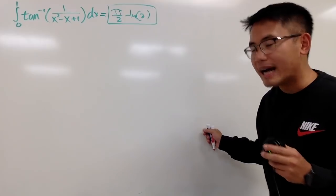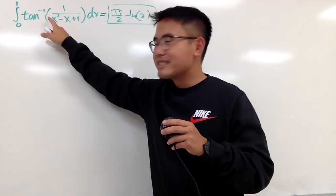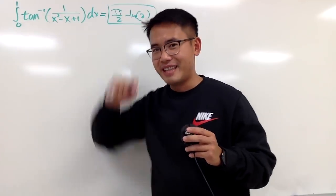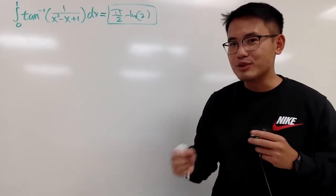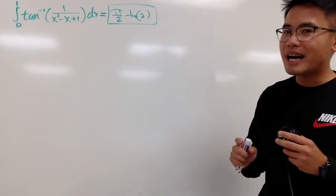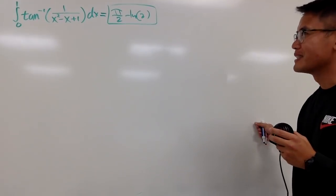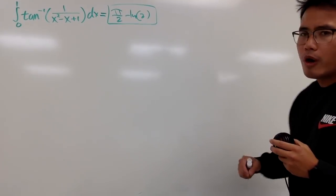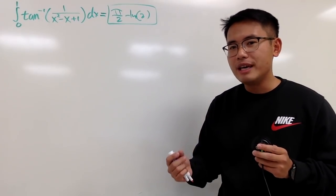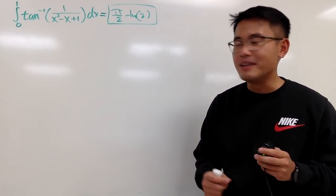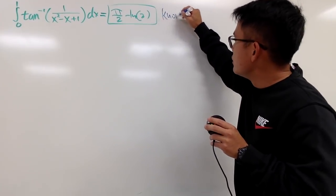We can all agree that this is hard to integrate because we have x squared in the denominator inside of the inverse tangent. So we must somehow come up with ways to break it apart. If we can do that, we are on top of our game. Recall that we do have the angle sum or angle difference identity for regular tangent, so let's bring that up right here.